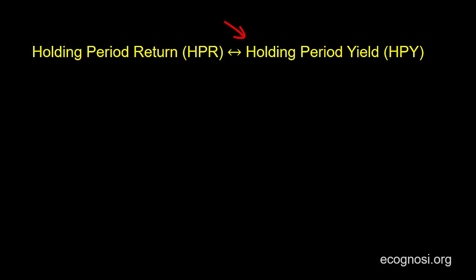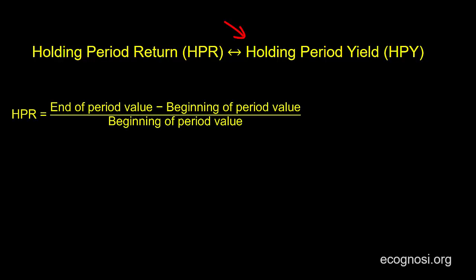But in this case, imagine you invested in a security. So the holding period return from your investment in the security would equal the end of period value. You can think of this end of period value as either the amount you receive on the day you sell the security, or if you hold the security until maturity, then it's the amount you receive when the security reaches its maturity date and makes its final payment. So starting again with our formula, the holding period return equals the end of period value minus the beginning of period value, divided by the beginning of period value.